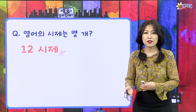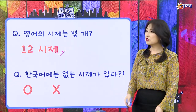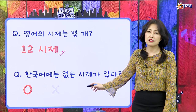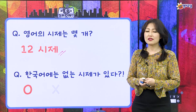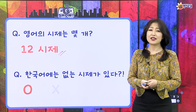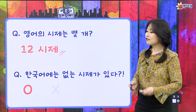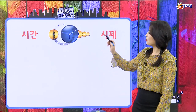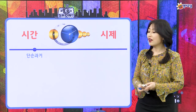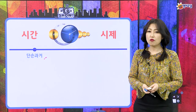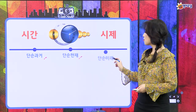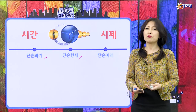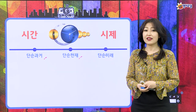한국어에는 잘 사용하지 않는 시제가 영어에는 있어요. 하지만 영어를 잘 하려면 이 완료 시제를 잘 사용해야 해요. 아예 없는 건 아니에요. 그냥 말하는 방식이 다를 뿐이고, 우리는 완료 시제라는 영어의 독특한 시제를 한번 만나보려고 해요. 시간은 시제라고 했고, 시간이 흘러가고, 배웠던 것 중 첫 번째가 단순한 과거였었죠.